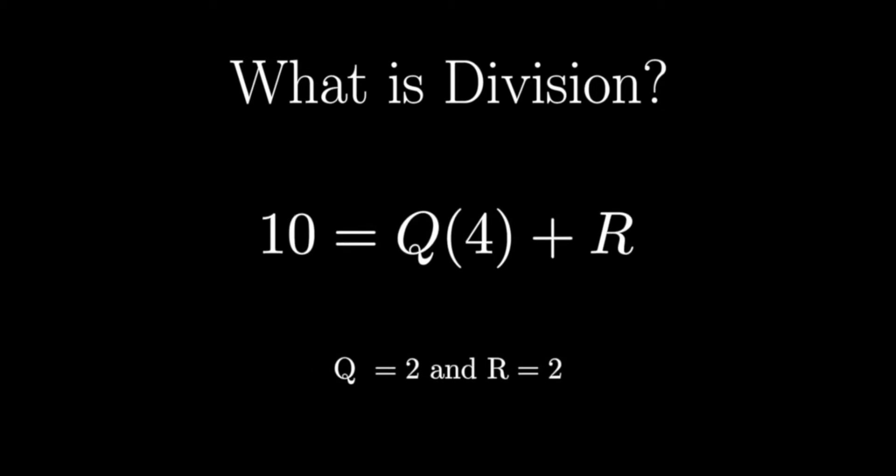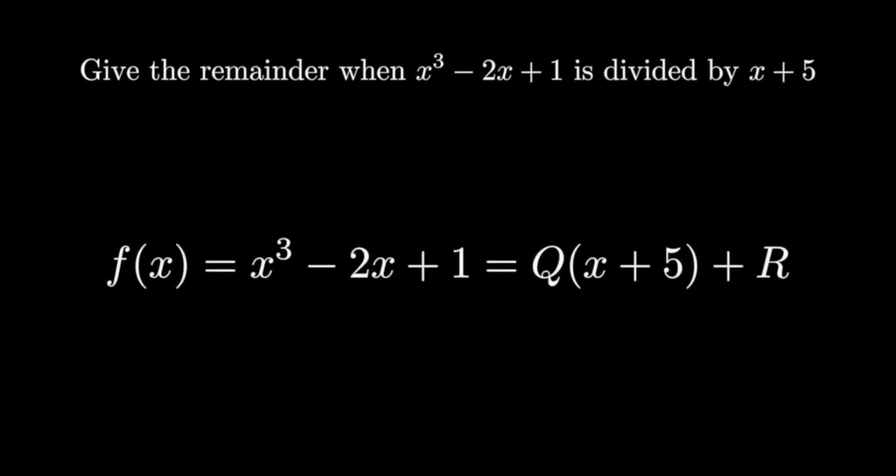Technically speaking, this means that we can express 10 as q times 4 plus r, where q is the quotient and r is the remainder. This will become useful later. Now back to the original problem, we can express f of x as q times x plus 5 plus r.